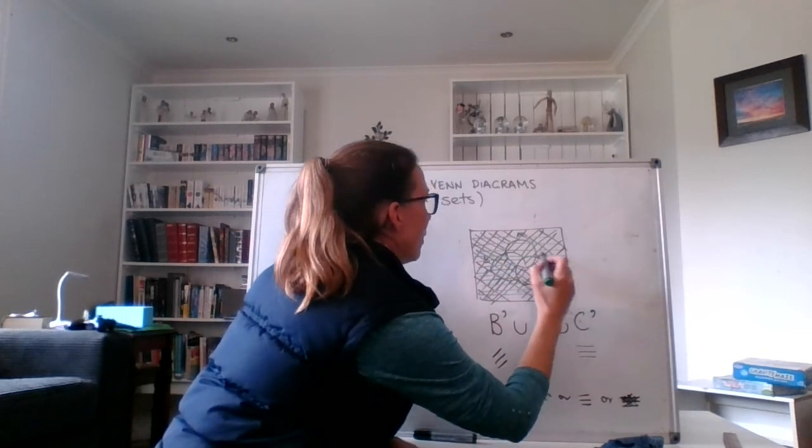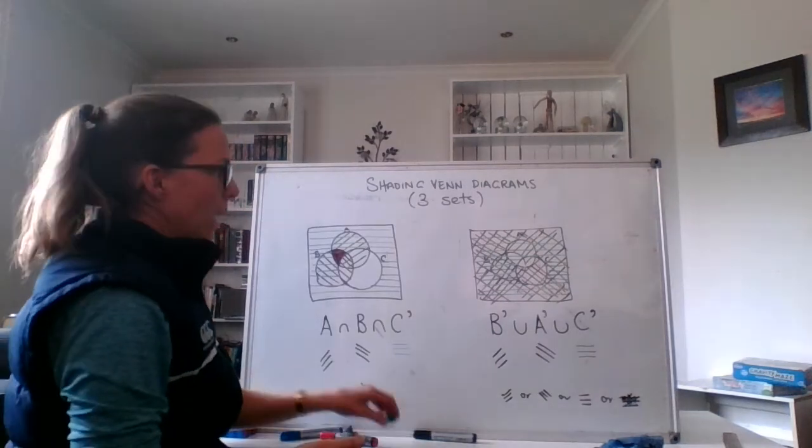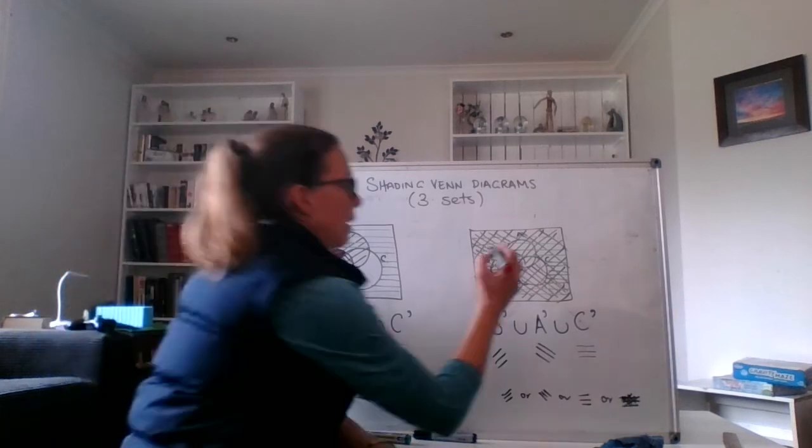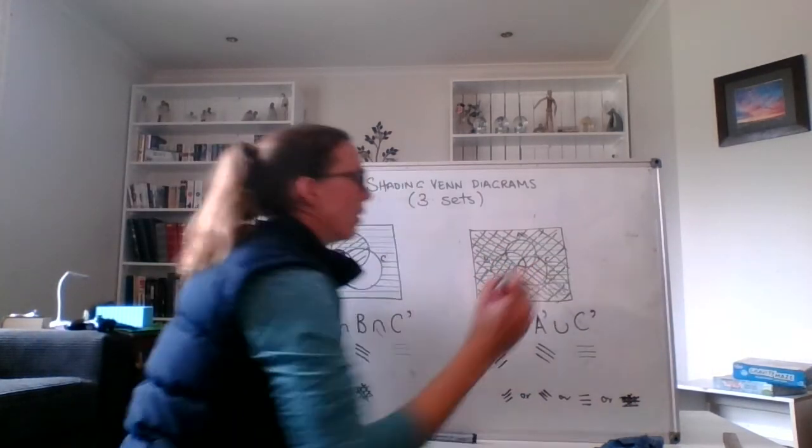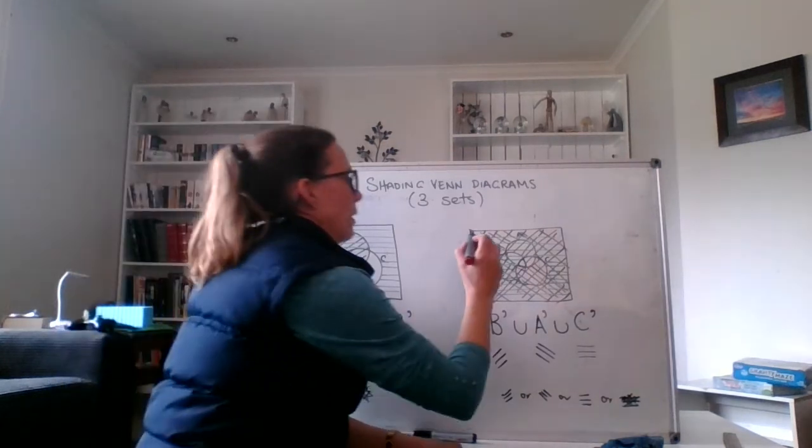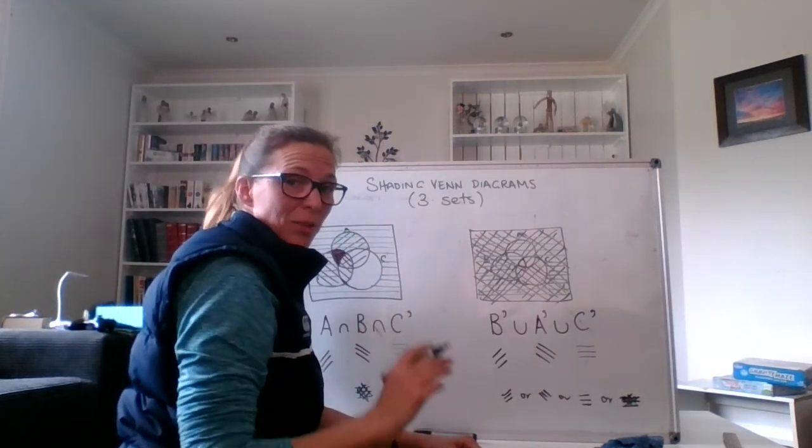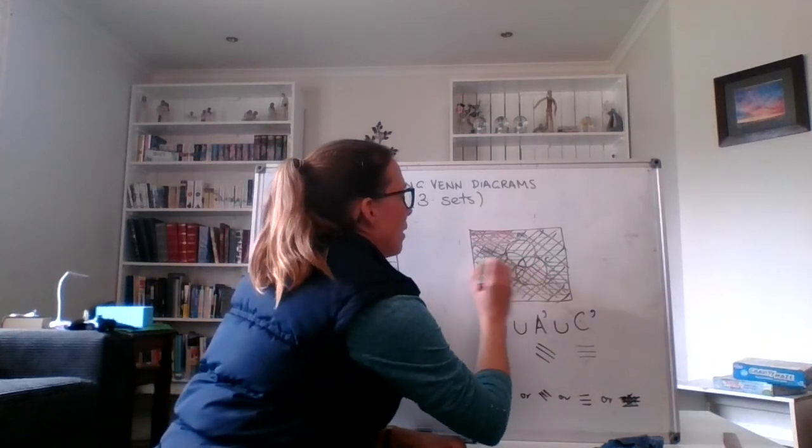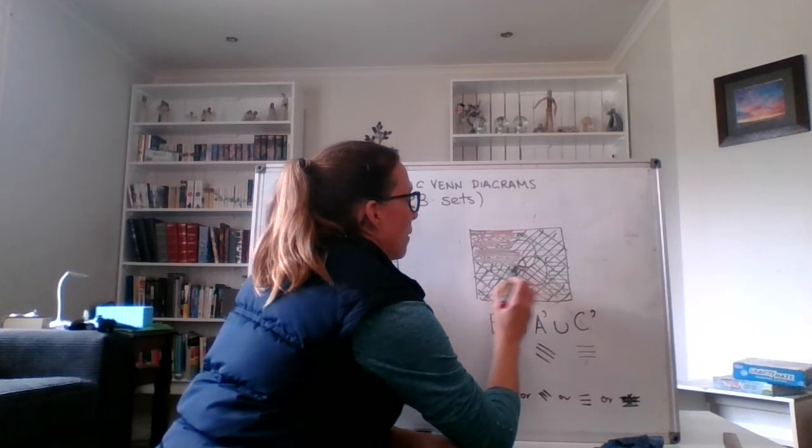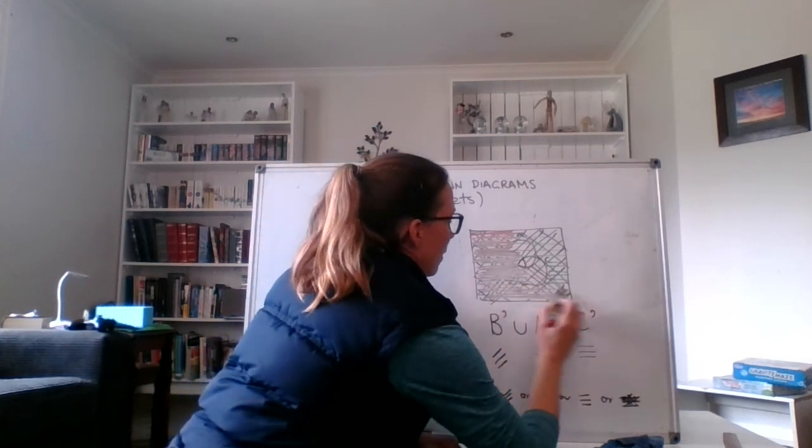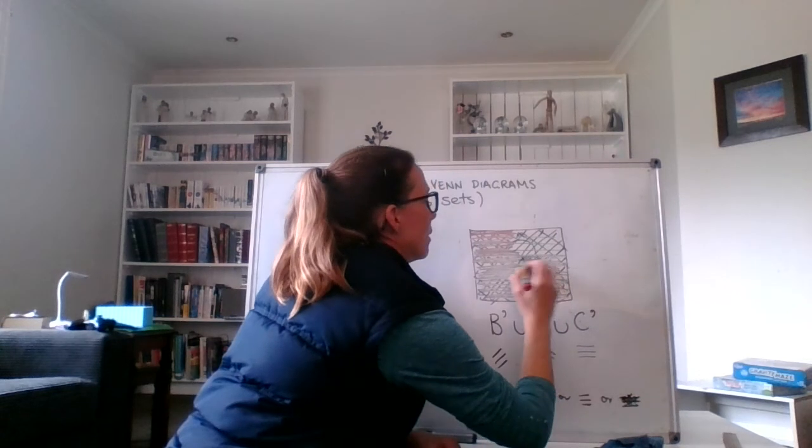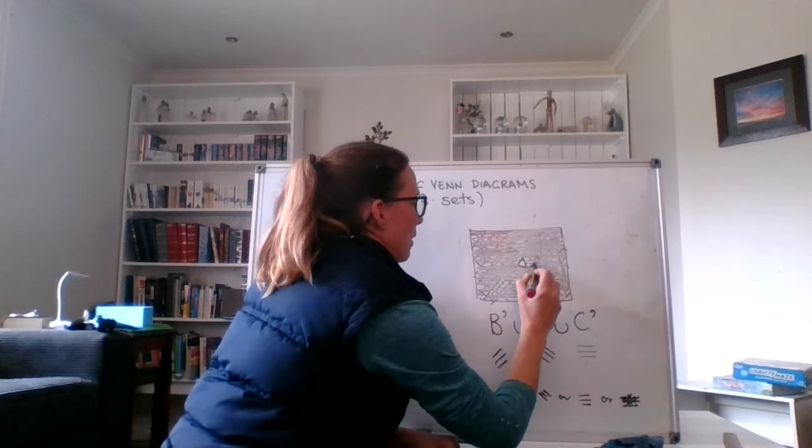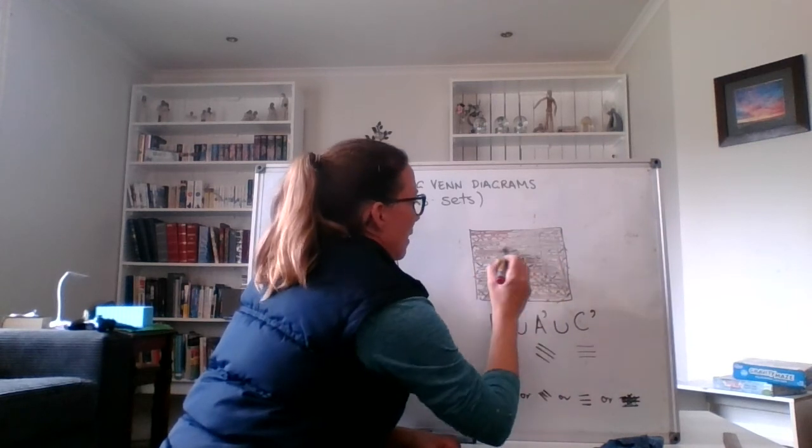Now, once I fill that in a little bit more thoroughly, we actually start to realize that the only place that is not colored in is this space. This is the only space that is not colored in. So I want to shade everything else except that space. I want to shade everything.